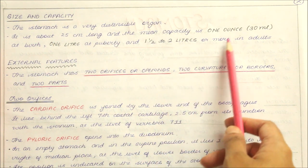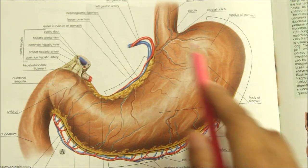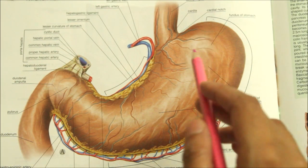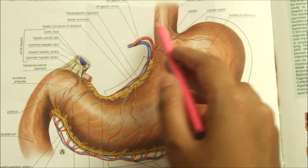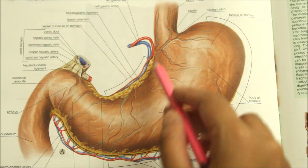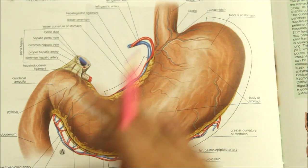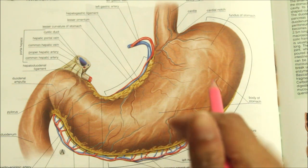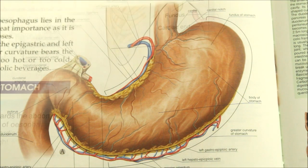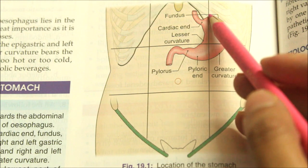Looking at the external features of the stomach, it has two orifices, two curvatures or borders, two surfaces, and two parts.